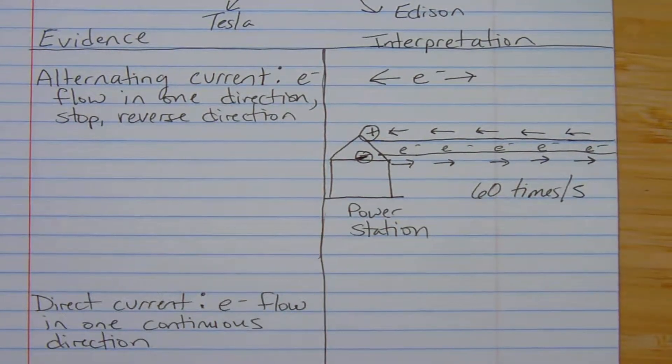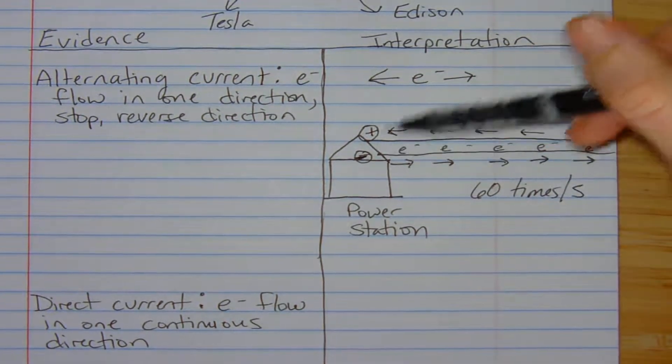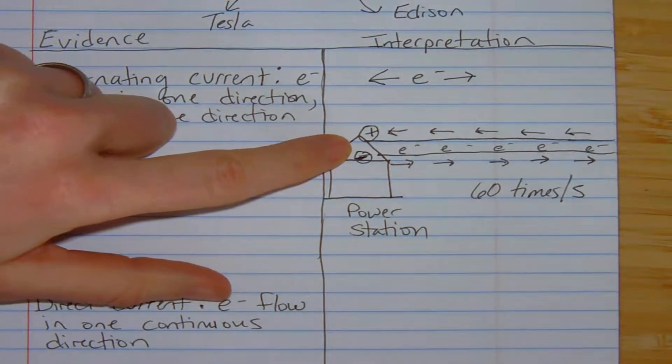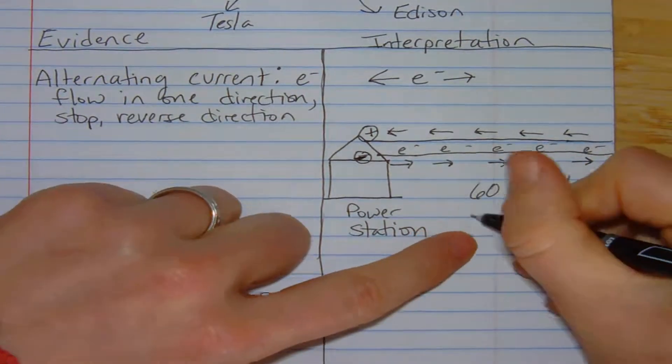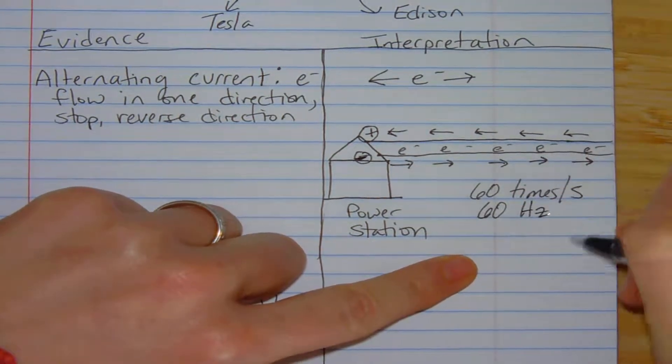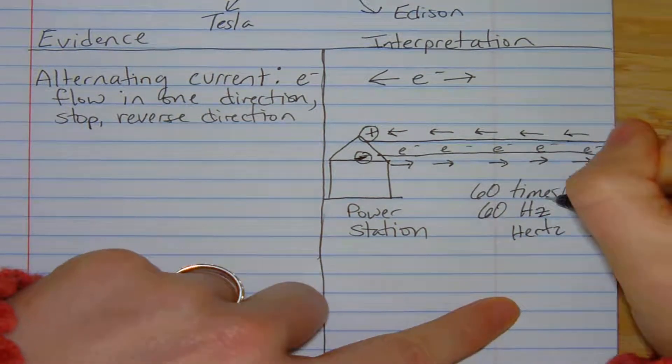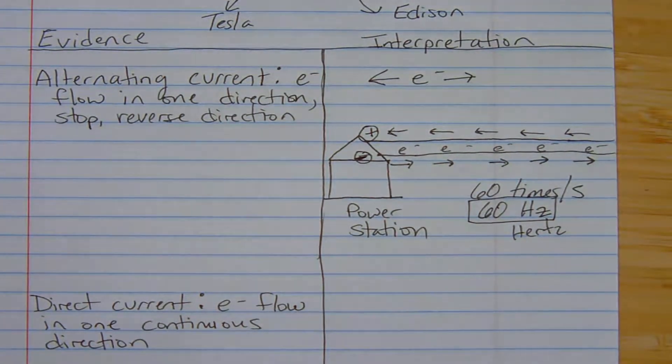When you talk about a frequency, it's how often something happens. And the power station will have this happen, the switch will flick 60 times per second in the United States. In some other countries they'll run their alternating current between 50 and 60. So clearly this isn't a person doing it, it's a machine. We don't have the capability to flick a switch 60 times in one second. So you'll see it referred to as a frequency of 60 hertz. 60 hertz is going to be the frequency of alternating current within the United States.